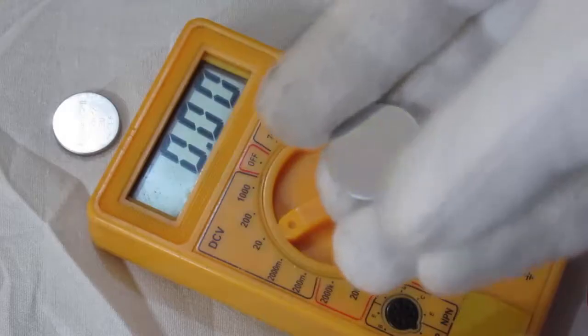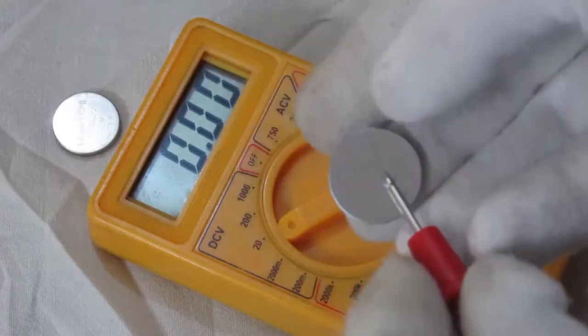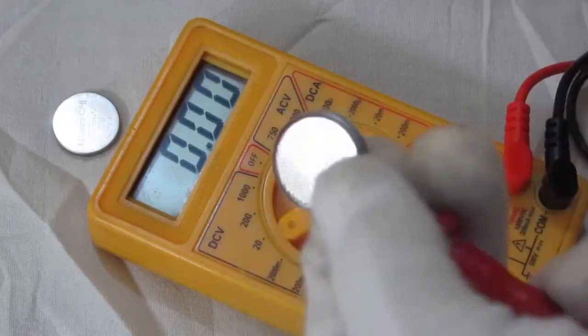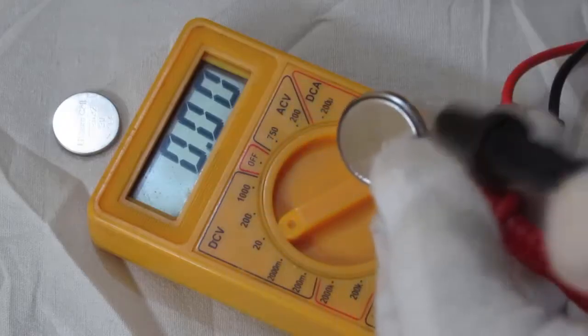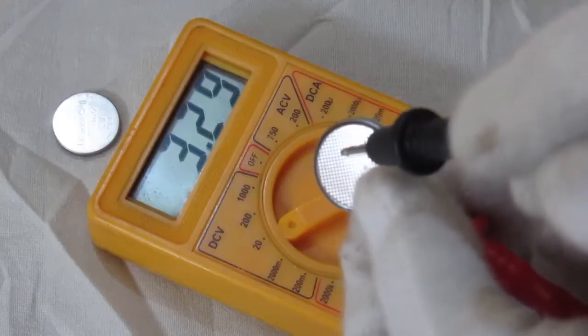So we have a new battery. Let's check this battery voltage. Touch the red probe on the positive side of the battery and black probe on the negative side of the battery terminal.